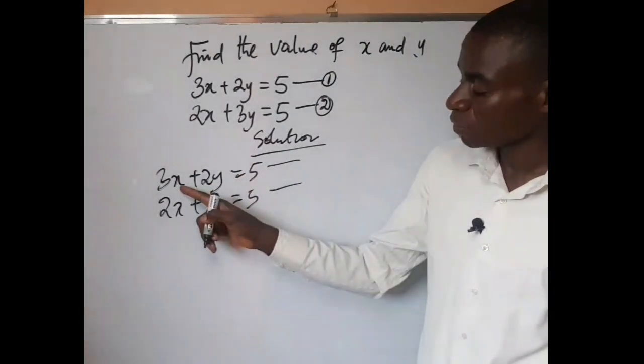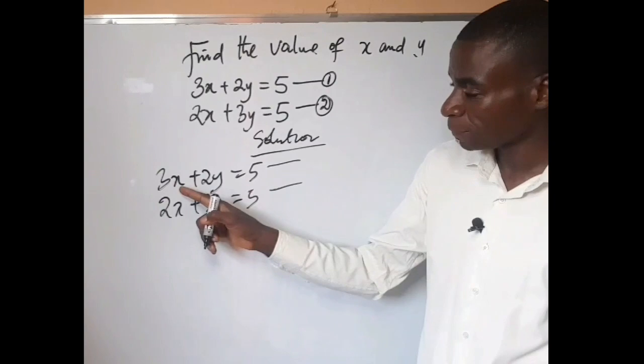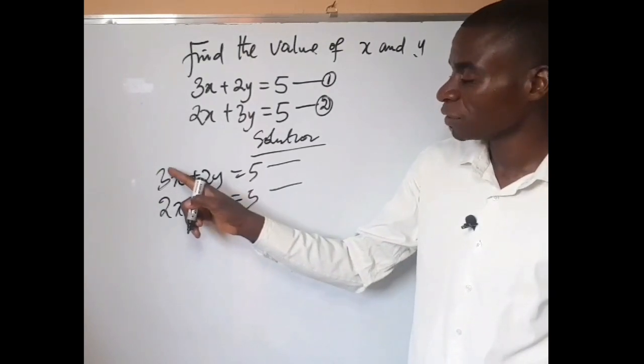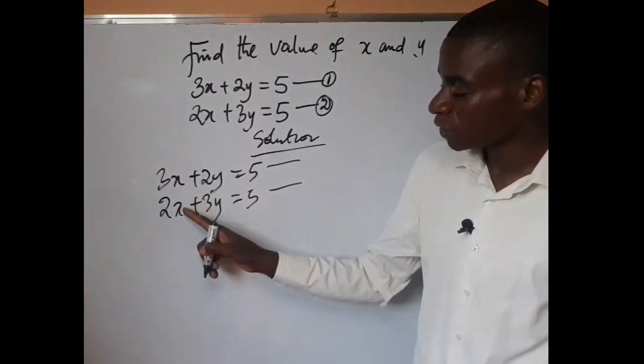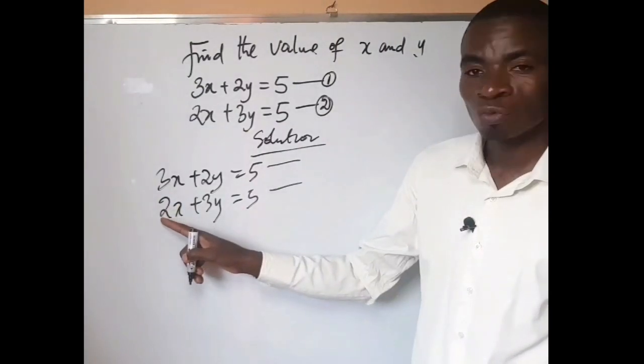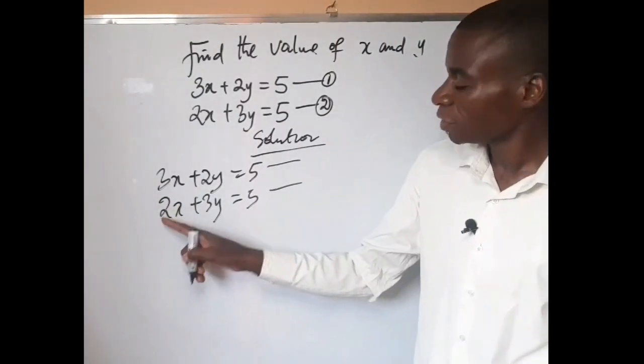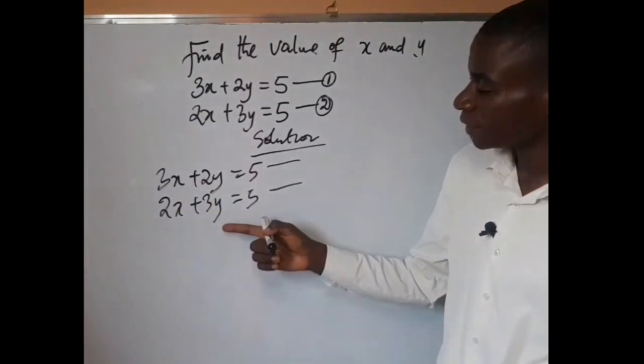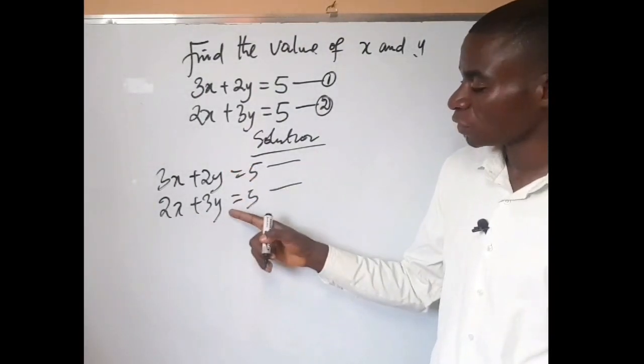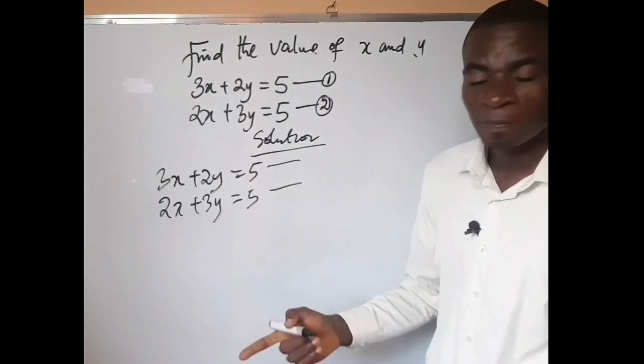For example, if I want to eliminate x, then it means that the coefficient of this x and the coefficient of x in equation 2 must be the same. Now looking at the equation, you'll find that the coefficient of y in equation 1 and the coefficient of y in equation 2, they are not the same.